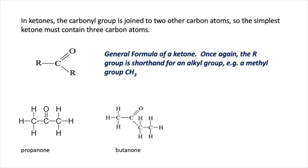In ketones, the carbonyl carbon is joined to two other carbon atoms, so the simplest ketone must contain at least three carbon atoms. The general formula of a ketone is R–C(=O)–R, where R is shorthand for an alkyl group such as a CH3 group. Two examples of ketones are drawn here: propanone has a CH3 attached to a C double bond O and a CH3, and butanone has a CH3 attached to a C double bond O and then CH2CH3. The alkyl groups attached to the carbonyl can be the same, as in propanone, or different, as in butanone.